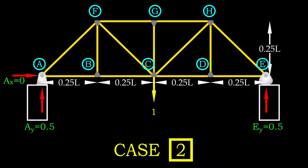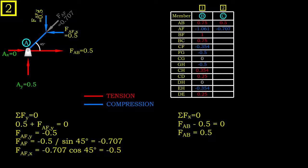For the second case, the unit load is located at node C, which is the midpoint of truss. Given the symmetrical geometry of truss, the reaction forces are both 0.5. The method of joints is deployed again to determine the axial force in members.